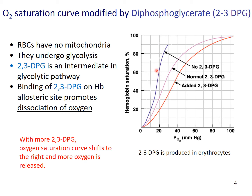For a blood sample that has little or no 2,3-DPG, it will have a very high affinity towards oxygen — meaning it can bind oxygen very easily, but it will hardly release any oxygen.